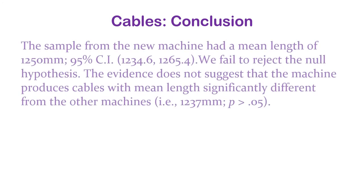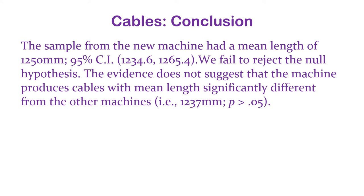The new machine might be doing just fine — consistent with the others. We'd report the sample mean of 1,250 millimeters with a 95% confidence interval. We fail to reject the null hypothesis; the evidence does not suggest the machine produces cables with a mean length significantly different from the other machines at 1,237.